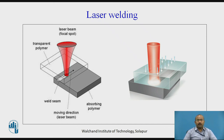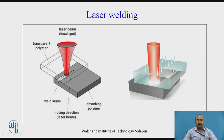This is an advanced laser welding technique. Two pieces are shown — one is a transparent polymer and the other is an absorbing polymer. The laser beam with a focal spot moves linearly from one end to the other, and the weld seam is formed along this path. In the second case, wherever the laser beam strikes the in-between surfaces of two plastic sheets, heat energy is generated and, as it travels, seam welding is carried out.